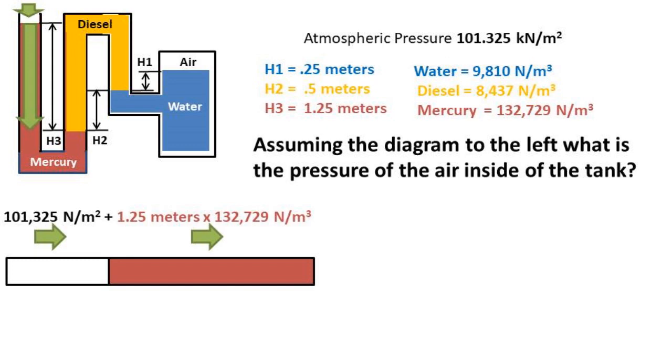Next, we have the mercury, which has more liquid on the side opposite of which we are solving for. This liquid is exerting a force towards the end we are solving for. We must add the specific weight times height to get the final pressure.